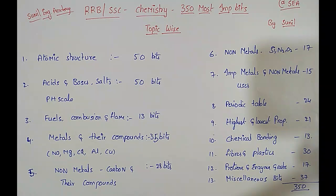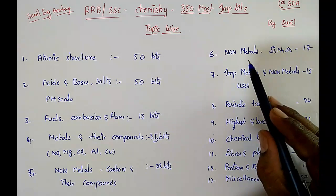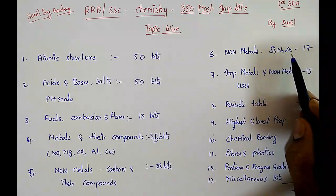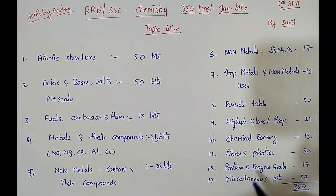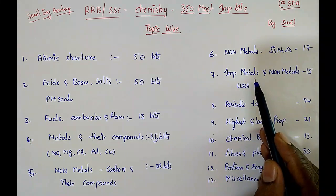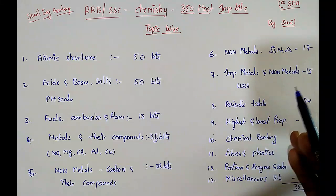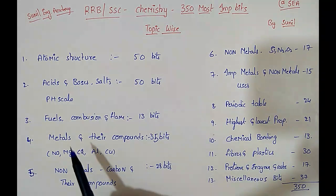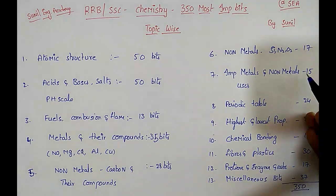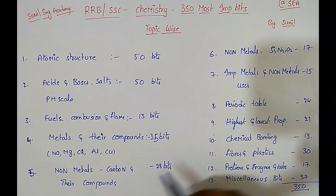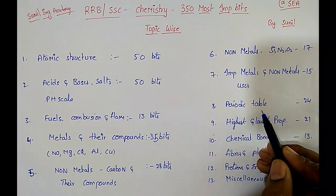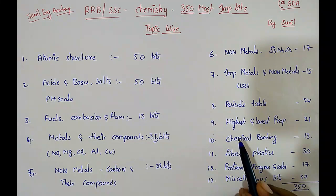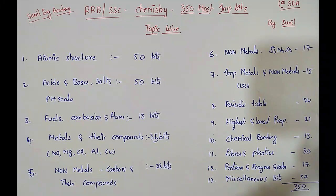In non-metals, that is carbon and their compounds — that is 28 bits. In non-metals, that is silicon, nitrogen and oxygen — 17 bits. Important metals and non-metals and their uses, meaning the leftover topics in metals and non-metals — I have covered 15 important bits. In periodic table, 24 bits. Highest and lowest properties of elements — these are very very important — that is 21 important bits.